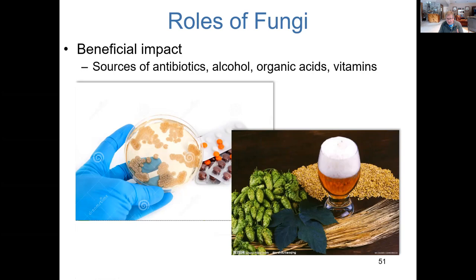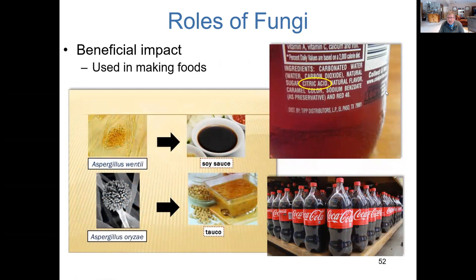We grow fungi in the laboratory and industry to produce a variety of useful chemicals included in our foods and medicines. Beer and most alcoholic beverages — including champagne — are produced as a result of yeast action. If you look at the ingredients of your soft drink, it probably lists citric acid; most industrial citric acid comes from fungi. Soy sauce also comes from a fungus.